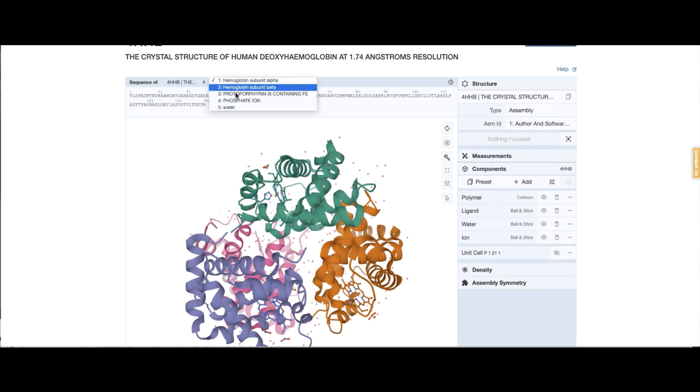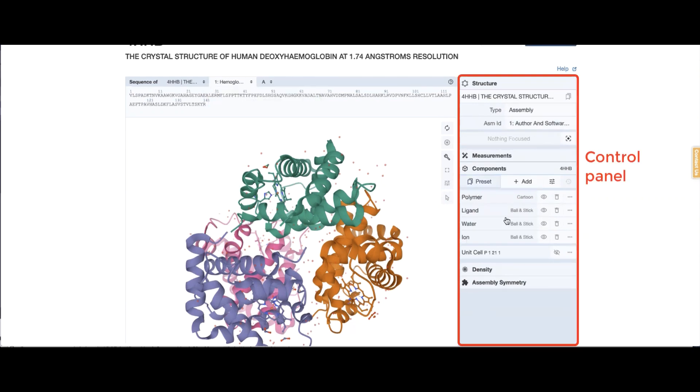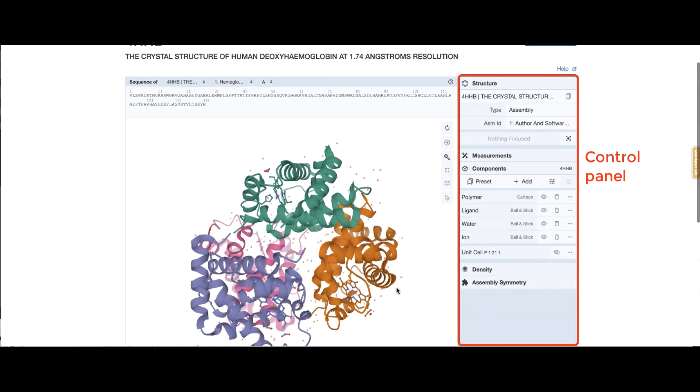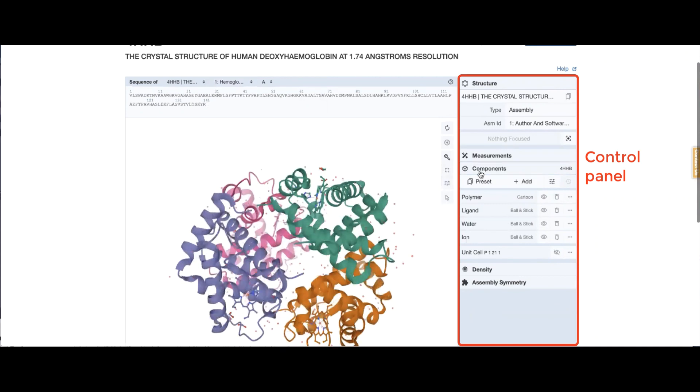And then other than that, there is the heme group, phosphate, and waters. This panel is to navigate and select and show different components.